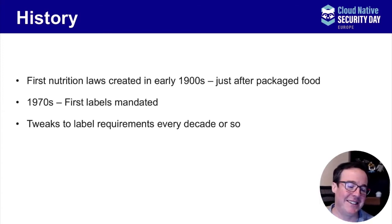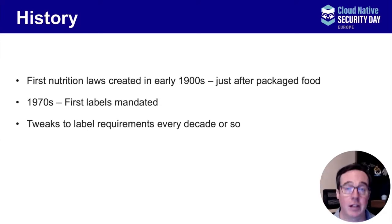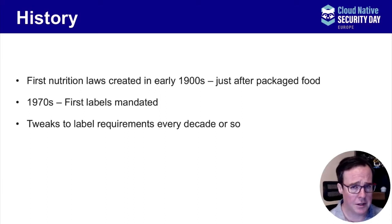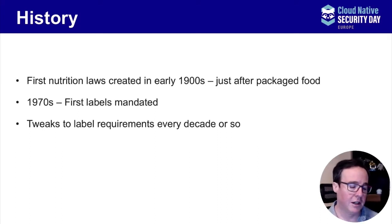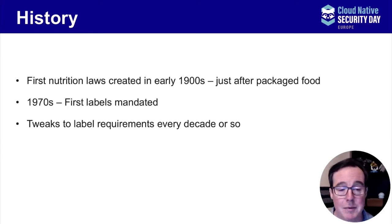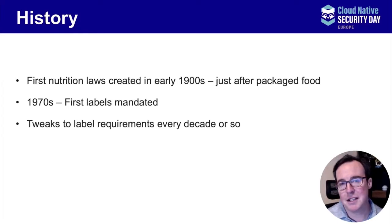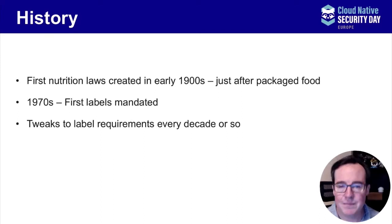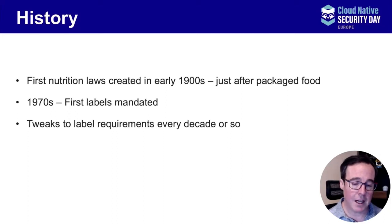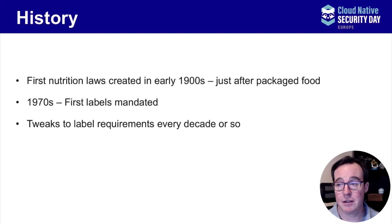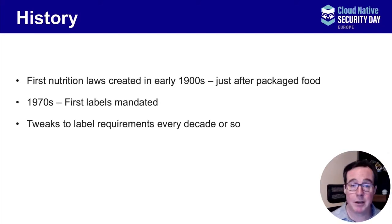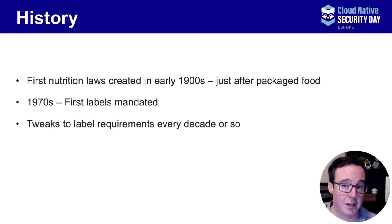In the 1970s, the first versions of nutrition labels were mandated if you were making health claims on the package — things like 'this makes your son healthier or stronger.' Baby food was especially scrutinized. Since then, every decade or so there's been some tuning and tweaking, based on science — either our understanding of what we consume gets better, or bad actors use science to find cheap ways of getting something into goods.